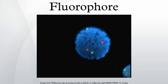Fluorophores are sometimes used alone as a tracer in fluids, as a dye for staining of certain structures, as a substrate of enzymes, or as a probe or indicator. But more generally, they are covalently bonded to a macromolecule, serving as a marker for affinity or bioactive reagents. Fluorophores are notably used to stain tissues, cells, or materials in a variety of analytical methods, including fluorescent imaging and spectroscopy.